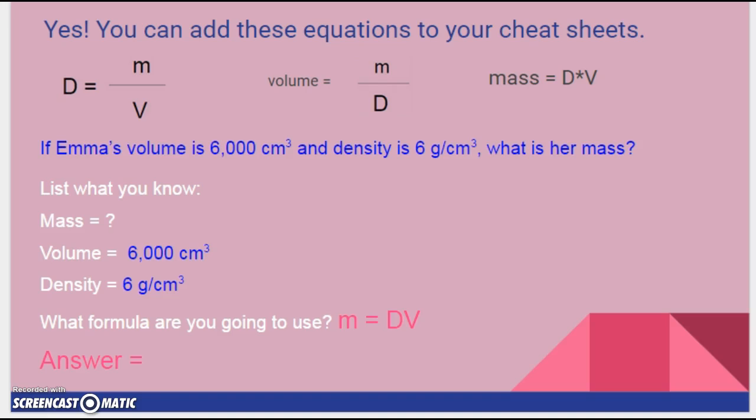So go ahead, put the numbers in. Hit pause. Tell me your answer. So 6,000 centimeters cubed times 6 grams per centimeter cubed equals 3,600. 3,600 what? What is your unit?